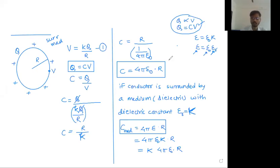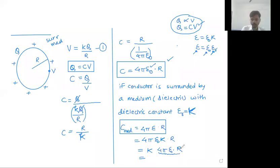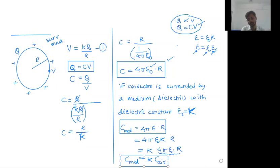You can remember the formula containing epsilon zero R. Only if in the question there is a medium, just replace epsilon zero by epsilon. This bracketed part is the capacity of the same conductor when there was air outside it. So C_med is equal to K times C_air. In this way you can relate the two capacities. Reply in the chat box - clear and written.